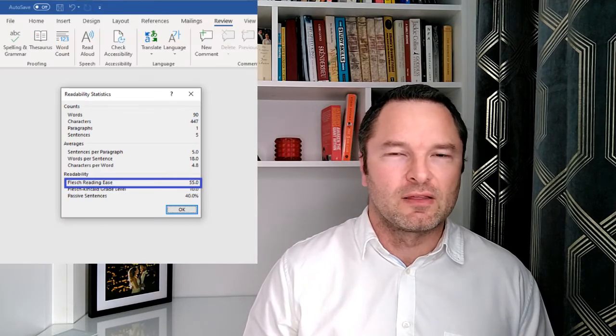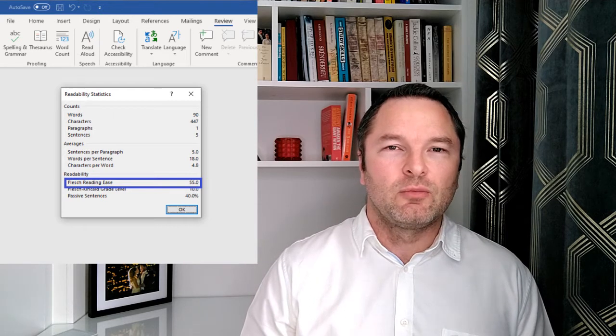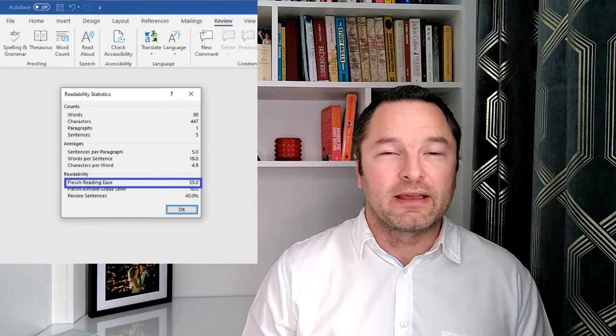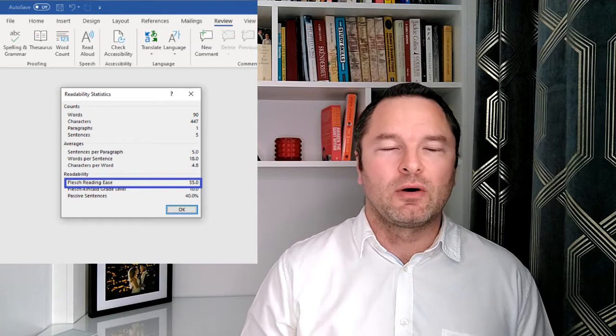If you want to objectively assess how readable your work is, then you could do a lot worse than looking at the Fleece Readability Score. And you can find this in Microsoft Word. It's actually part of the spellcheck functionality. Every time you run a spellcheck, you'll get that little dialogue box that summarises the results of the spellcheck. And one of those results will say something like Fleece Readability Score, and that's the one you're after.